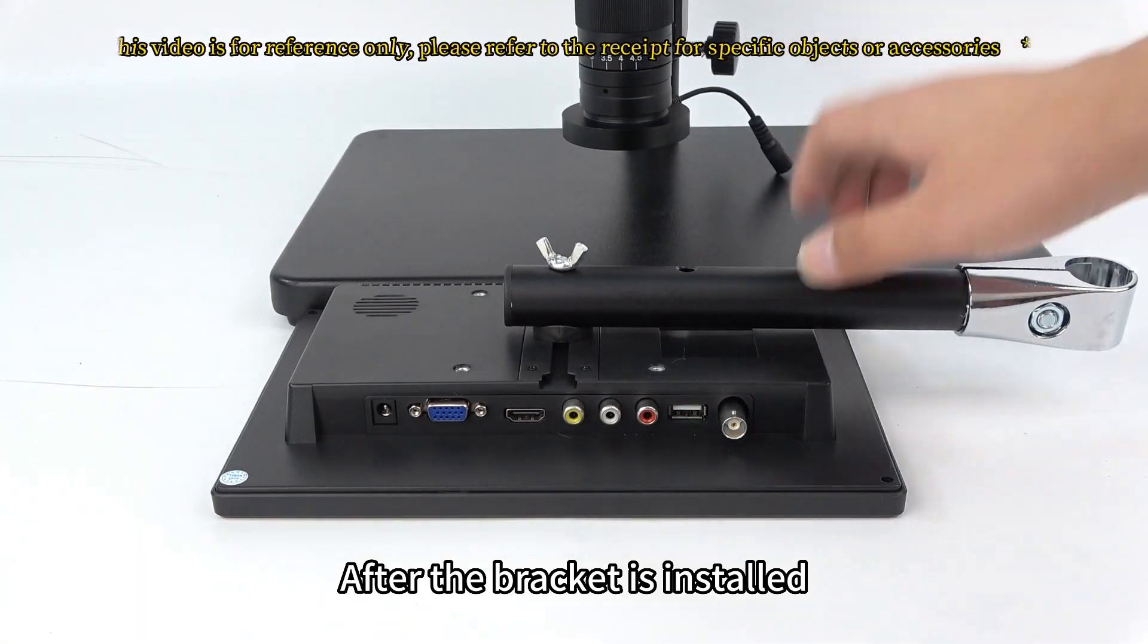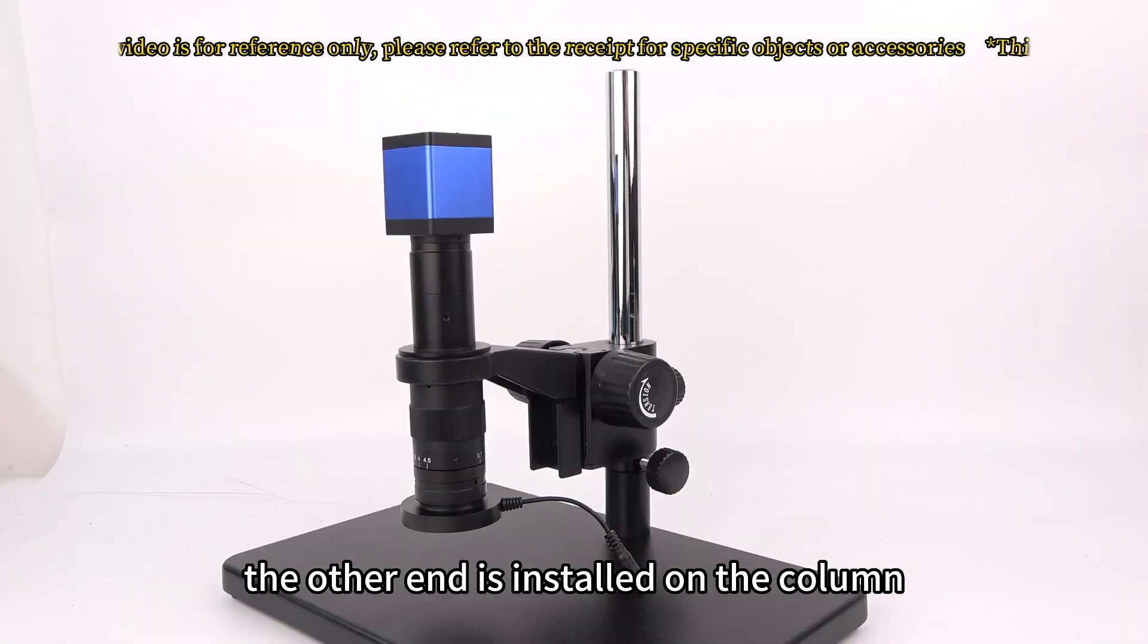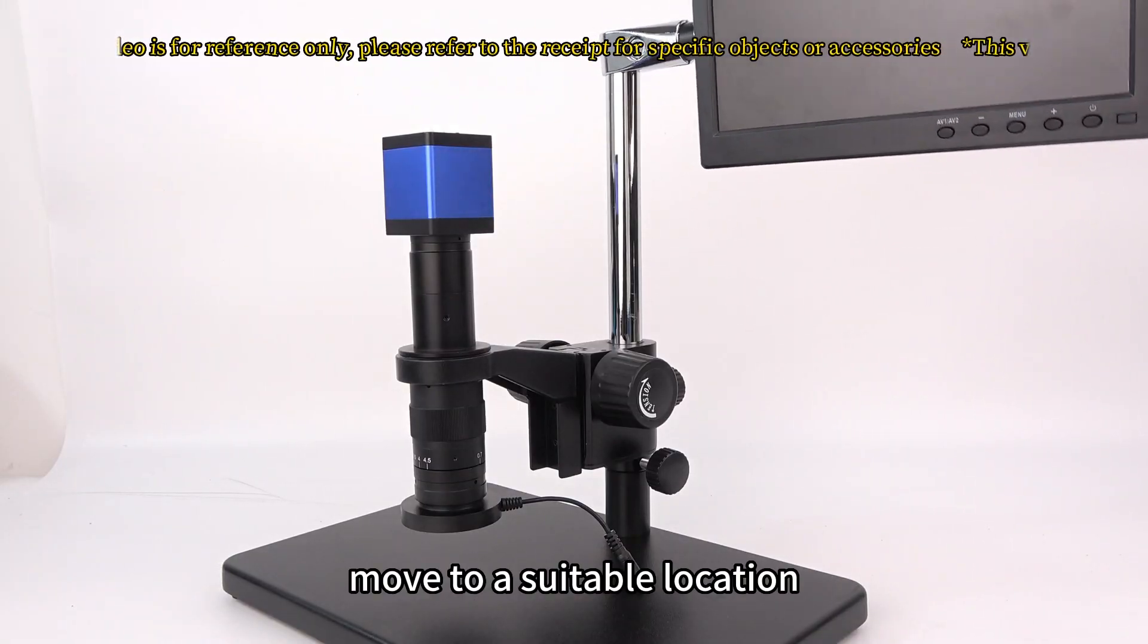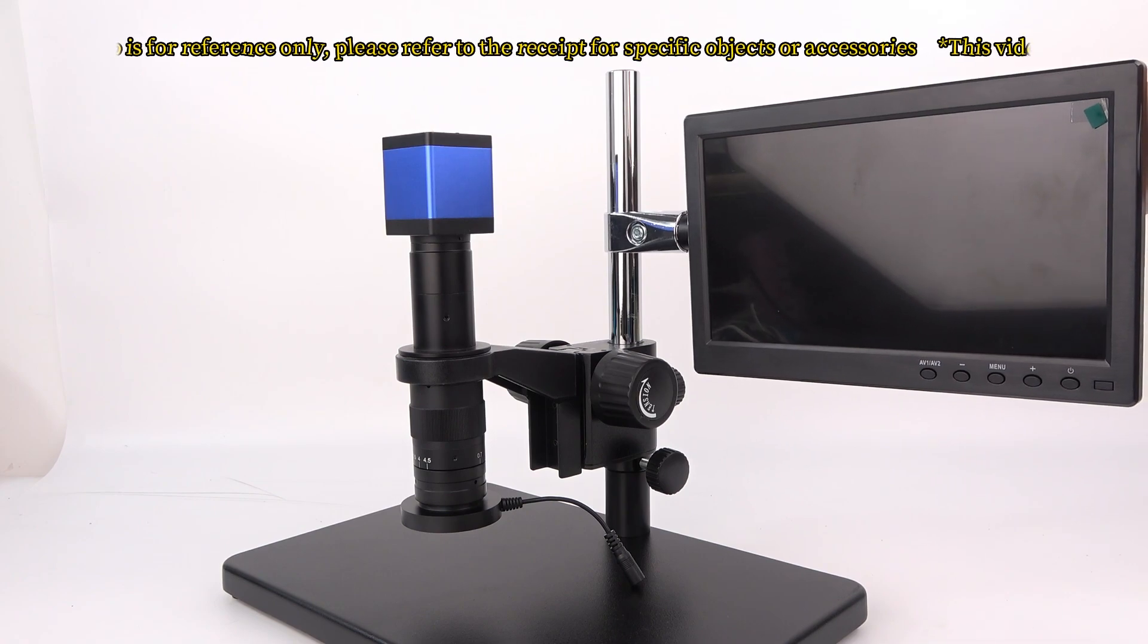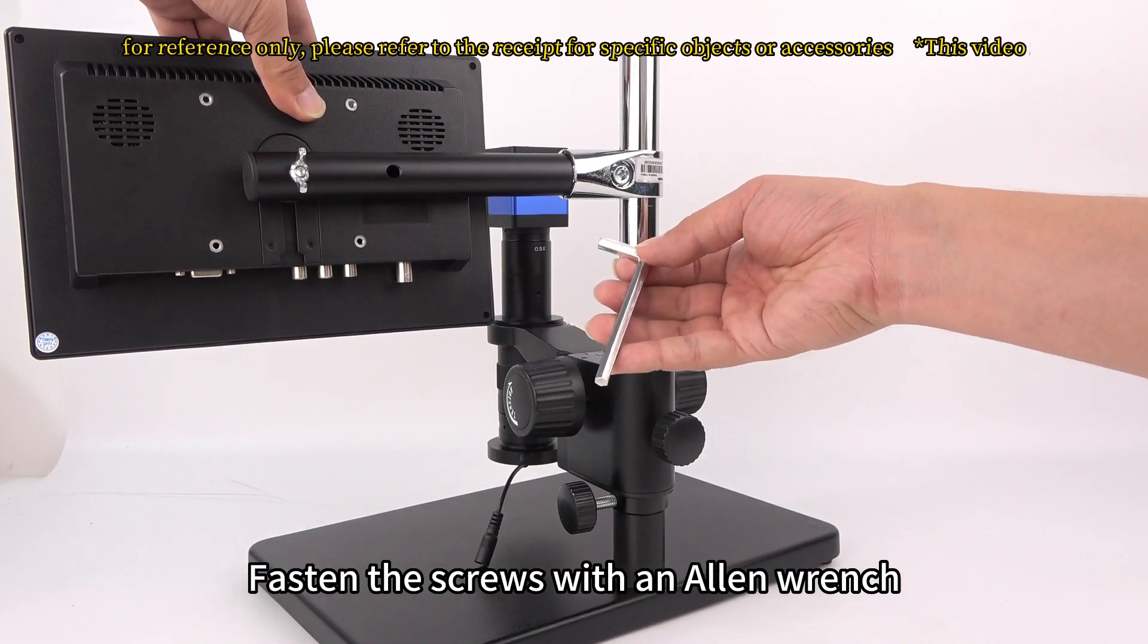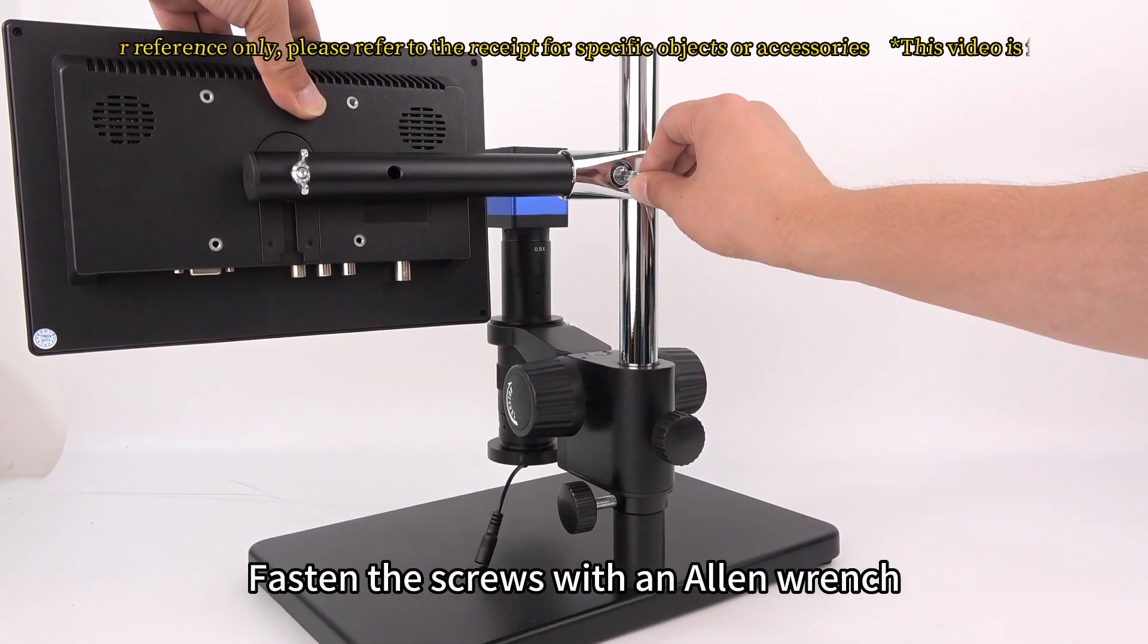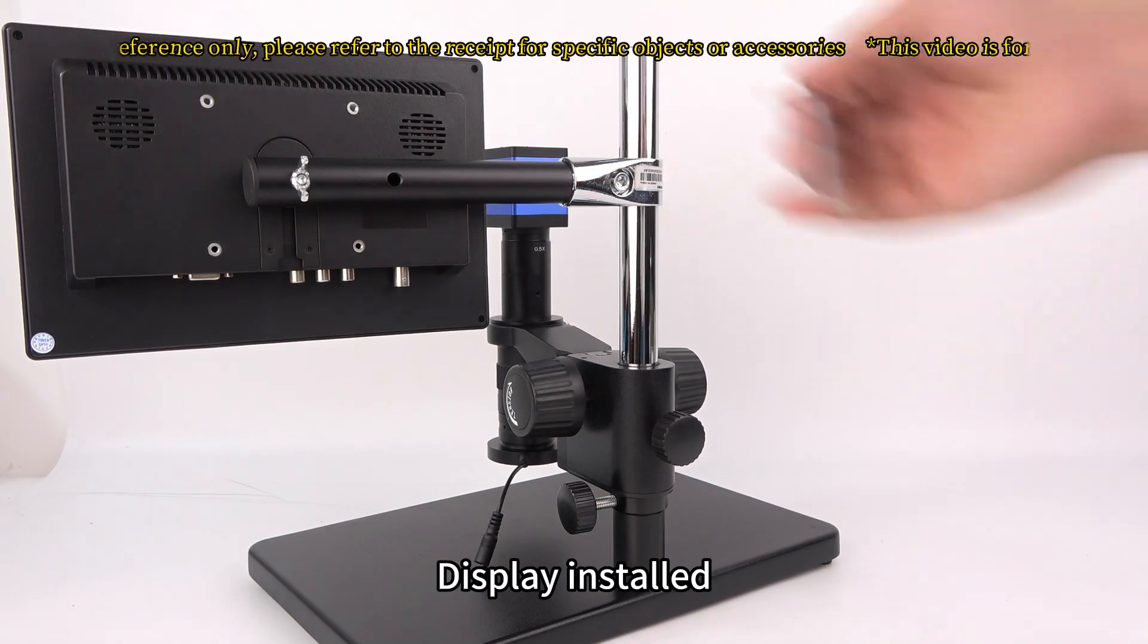After the bracket is installed, the other end is installed on the column. Move to a suitable location. On the back of the stand, fasten the screws with an Allen wrench. Display installed.